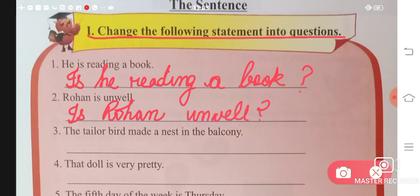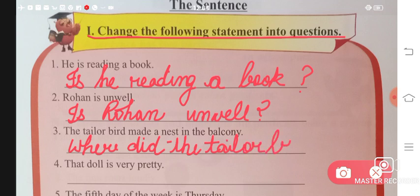Next is 'The tailor bird made a nest in the balcony.' 'Where did the tailor bird make its nest?' Where did the tailor bird make a nest? The answer would be that it made its nest in a balcony.